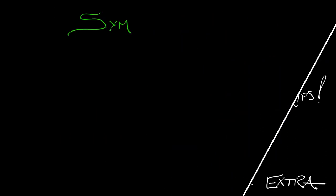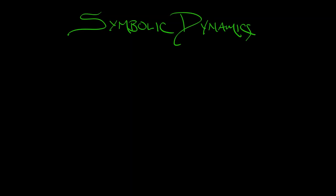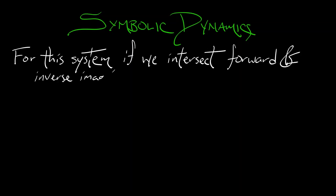And what I mean by extra is that it's got some extra symbolic dynamics. For this system, if we intersect those forward and inverse images of the square going more and more, getting thinner and thinner, then what we get, again, is an invariant set lambda with this map acting on it.